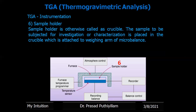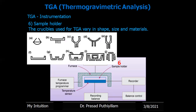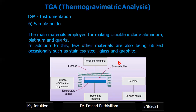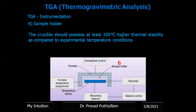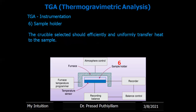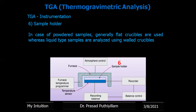The sixth component is the sample holder, which is a crucible. The sample is placed in the crucible, which is attached to the weighing arm of the balance. Different shapes, sizes and materials are used for crucibles. Main materials include aluminium, platinum and quartz; stainless steel, glass and graphite are also used. The crucible should have at least 100 degrees Celsius higher thermal stability than the experimental temperature. In the case of powder samples, flat crucibles are used; for liquid type samples, walled crucibles are used.